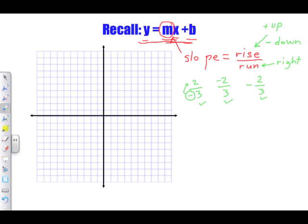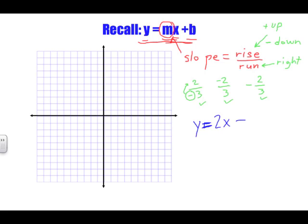Let's look at an example equation: y = 2x − 3. The number in front of x when in y = mx + b form represents the slope, so slope = 2. Since 2 is a whole number, we write it as a fraction: 2 over 1. So our rise is positive 2 and our run is positive 1.